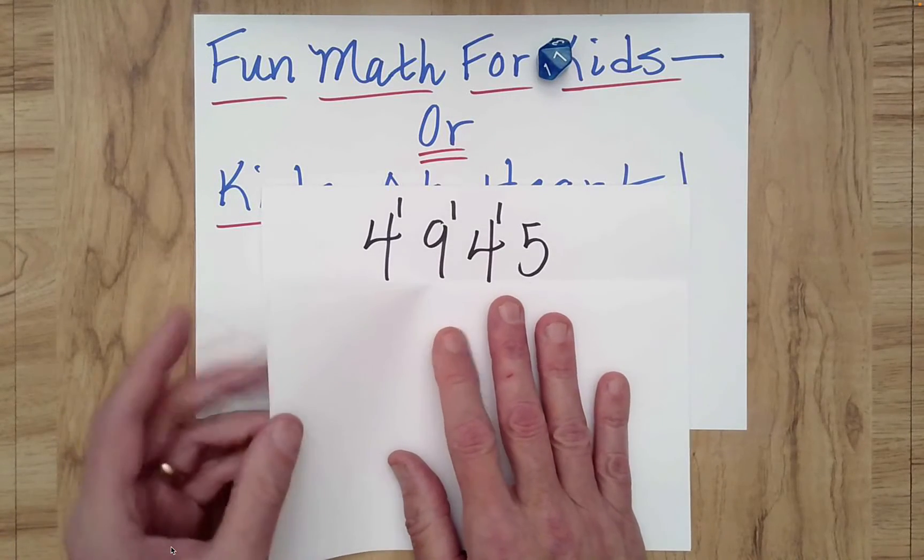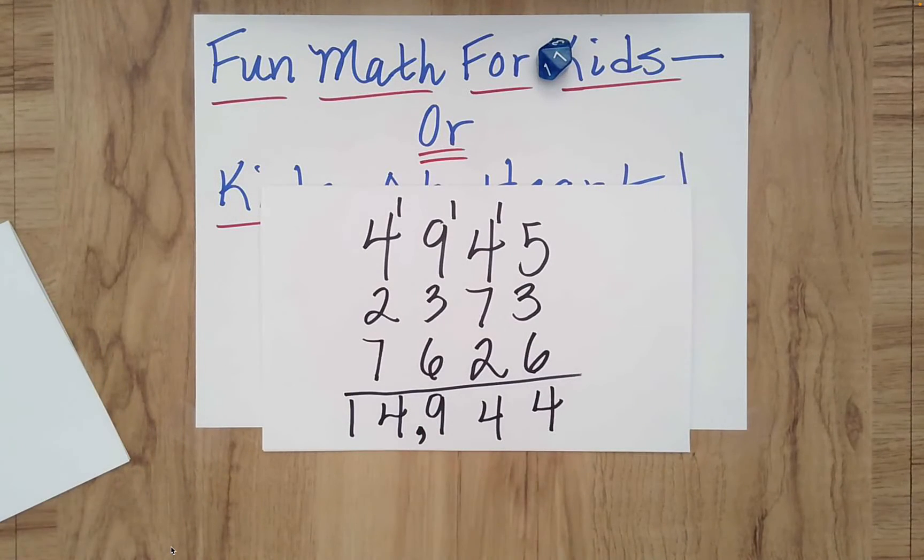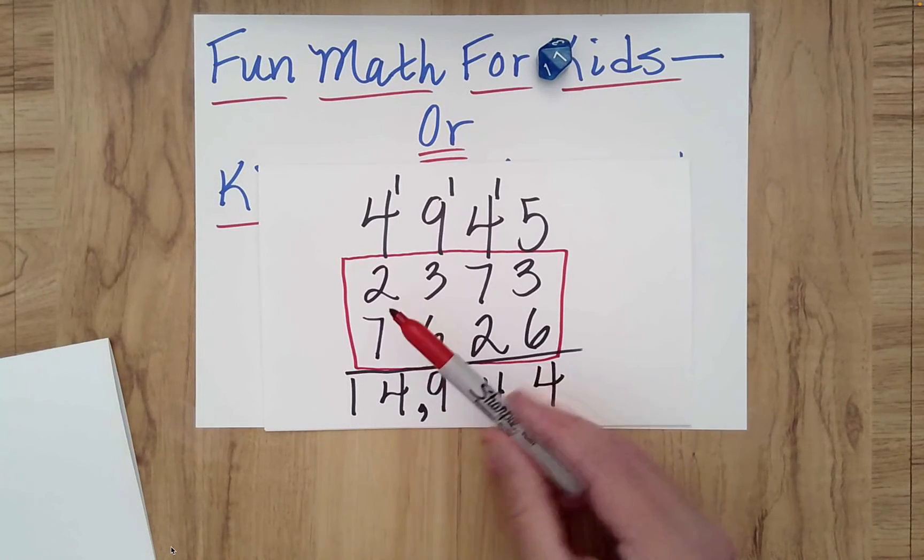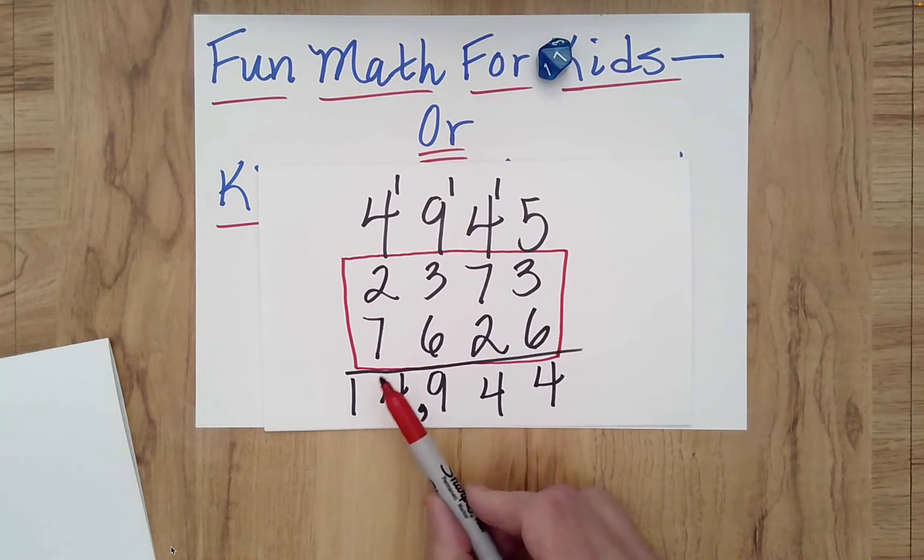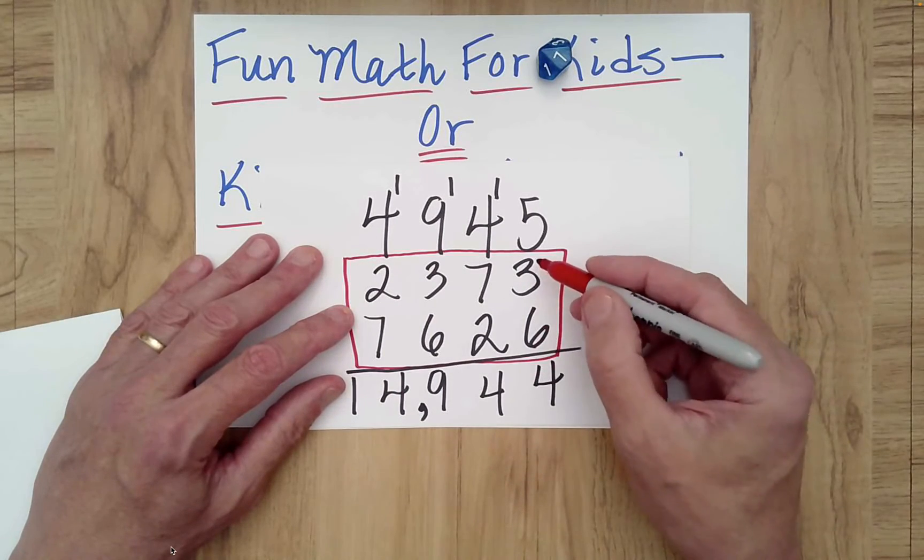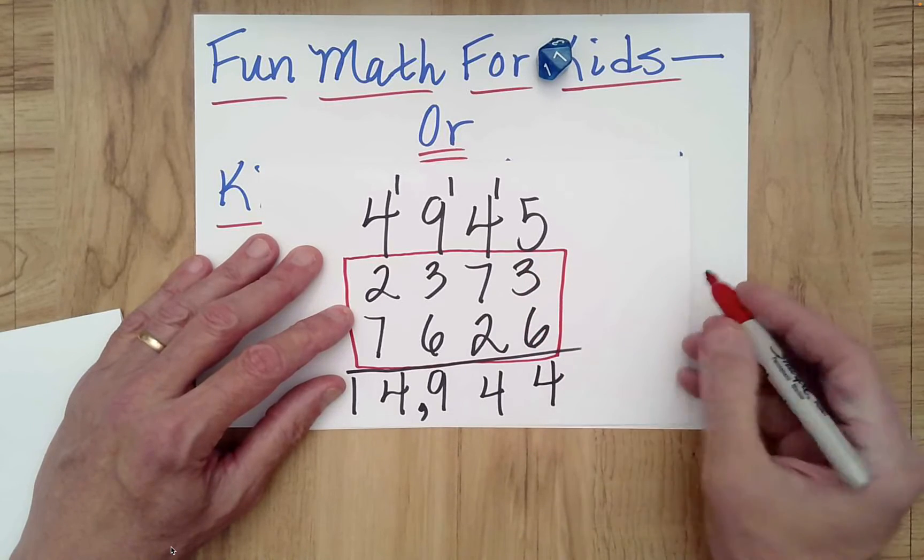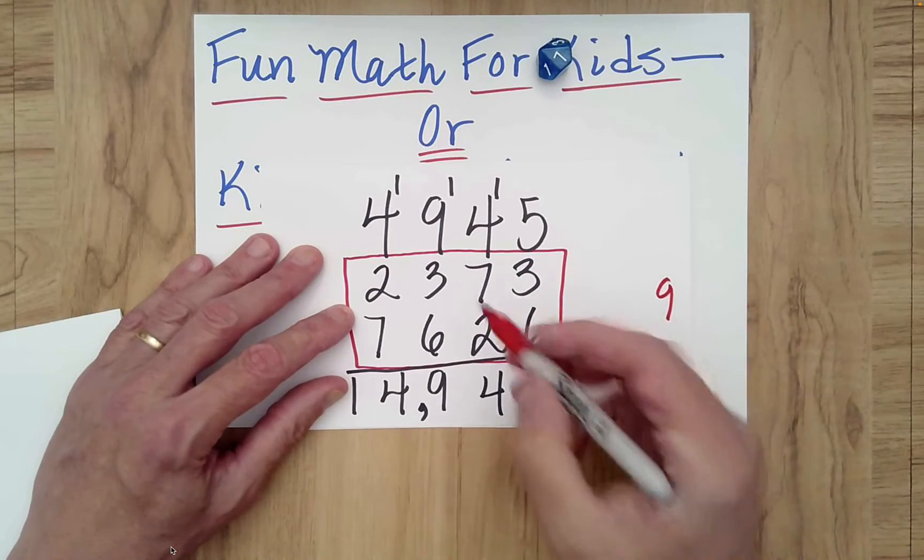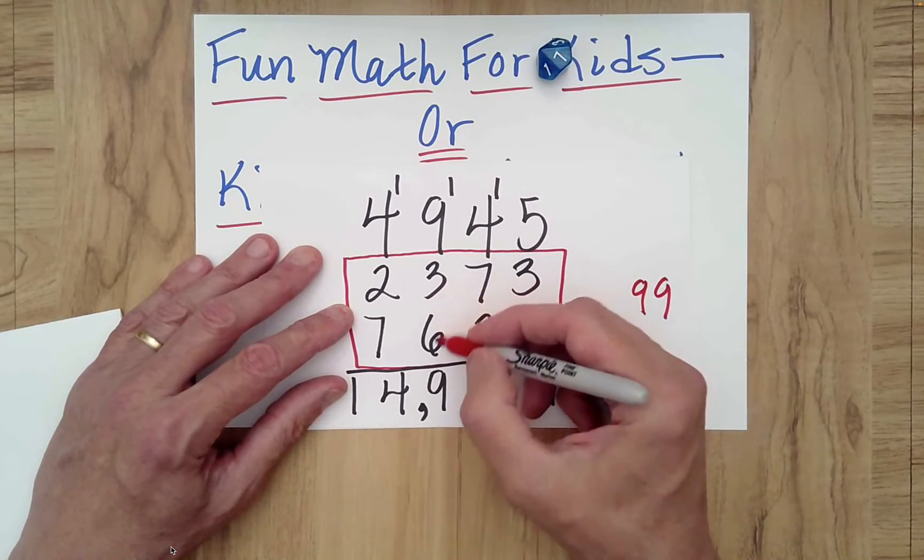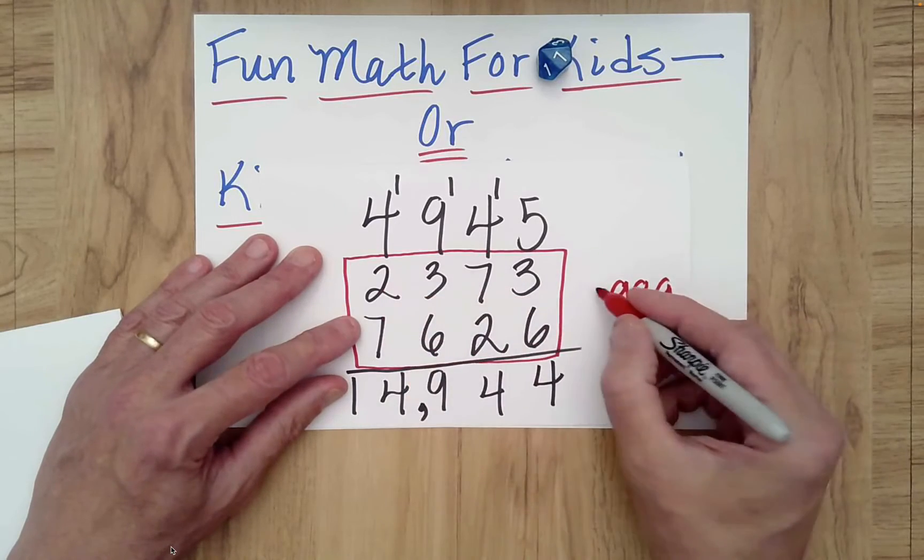Is there anything interesting that you notice about your second number and my four-digit number? So, for example, in the ones place, what do we get? Three plus six is nine. Tens place, seven plus two is nine. Three plus six is nine. Two plus seven is nine.